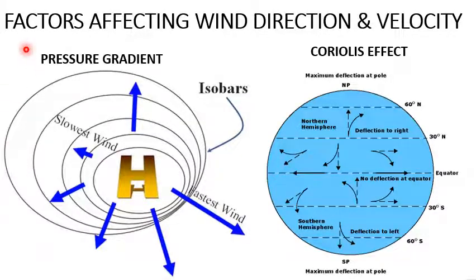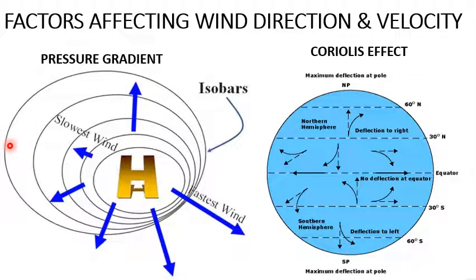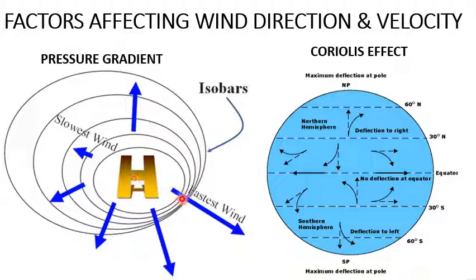Now children, factors affecting wind direction and velocity. There are two factors. One is pressure gradient — where the pressure gradient is low or gentle, the velocity of the wind will be slow, and where the pressure gradient is high or steeper, the wind will blow with high velocity.